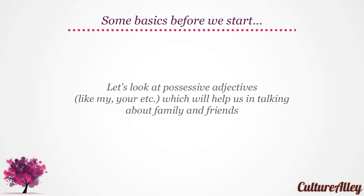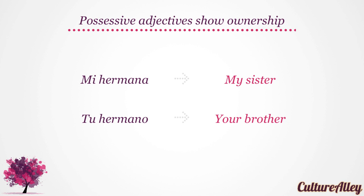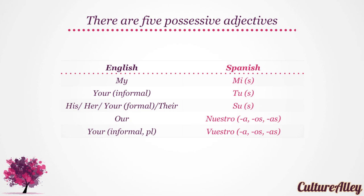Let's look at the possessive adjectives like my, your, etc., which will help us in talking about family and friends. Possessive adjectives show ownership. For example, mi hermana means my sister. Tu hermano is your brother. There are five possessive adjectives. My translates to mi. Informally, your becomes tu. His, her, their, or your formally is su.